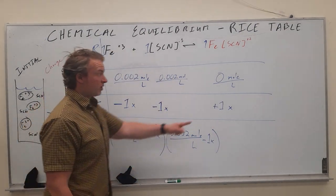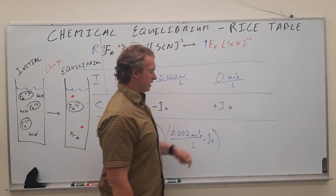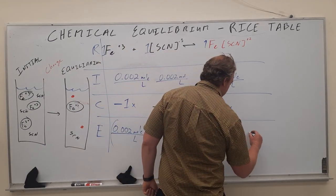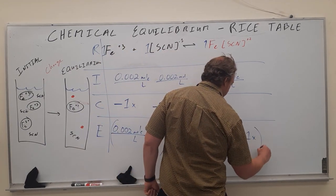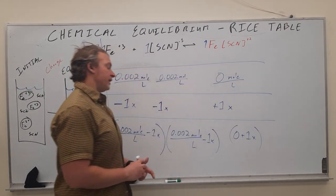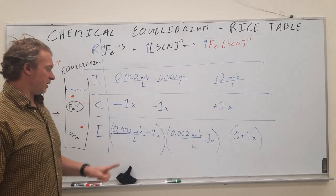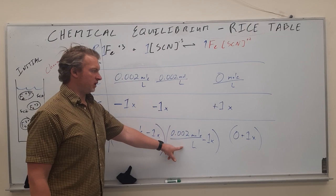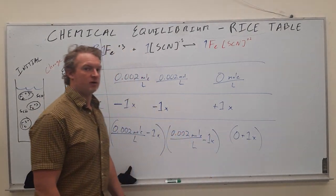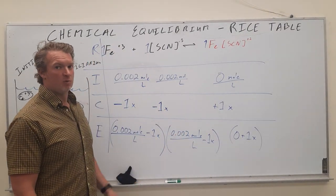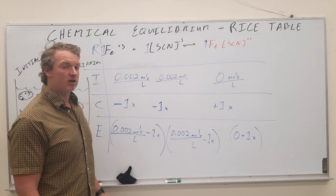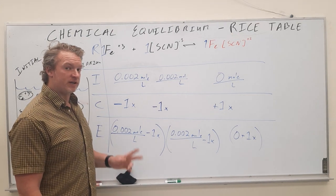Now our product here went 0 plus 1x. Now here we have things where each of these can be plugged in to our capital K expression, but we have an unknown x. So how can we solve for an equation that has two unknowns?